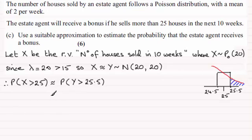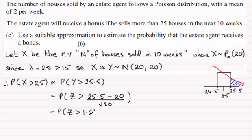So we need to standardize this, and we can say that this is going to be the same as the probability of Z being greater than the observed value here, 25.5, minus the mean, which is 20, divided by the standard deviation, which is the root of 20. And if you work this out, this is the same as the probability of Z being greater than 1.229, and so on.